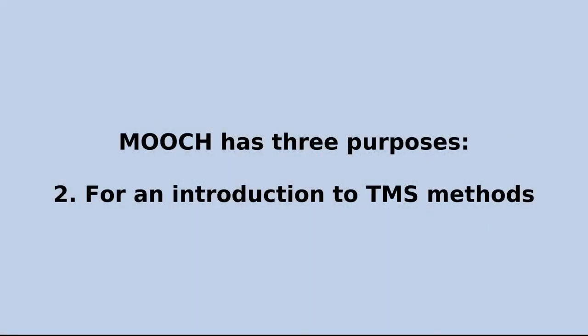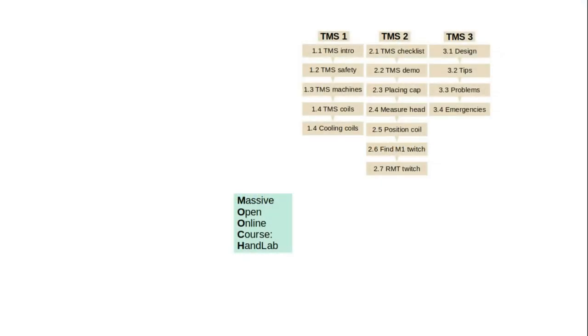The second purpose of Mooch is to give all students and researchers more generally an introduction to the research we do in the Hand Lab. In particular we want to focus on the methods that we use, and the most important of those methods is transcranial magnetic stimulation, or TMS. There are three chapters of videos which give a general introduction to TMS, useful for anyone learning about or using TMS in their research. These chapters give a general introduction TMS 1.1, an overview of fundamental methods TMS 2.1, and experimental design TMS 3.1.